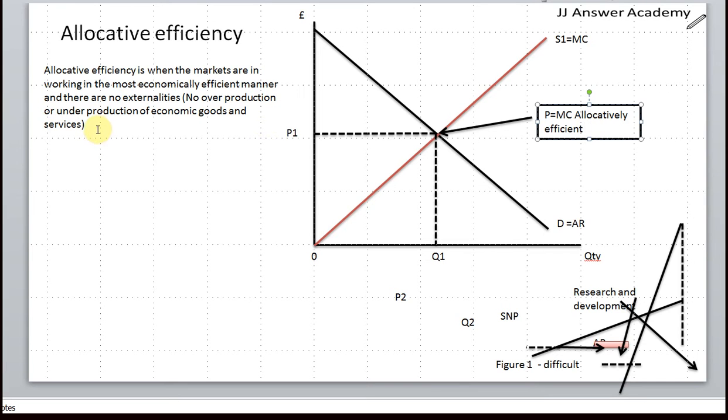And there is no externalities, no over production or under production of economic goods, which means there is no over or under consumption. However, in the real world that's very difficult to achieve because if this was a monopoly...